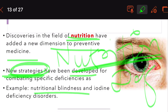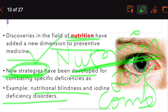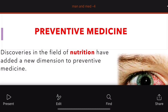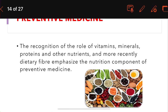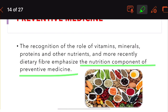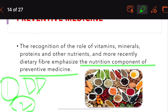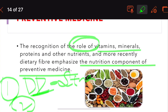Examples of deficiency disorders include nutritional blindness and iodine deficiency disorders, and strategies have been developed to combat these. The recognition of the role of vitamins, minerals, protein, nutrients, and dietary fiber is enhancing the nutrition component of preventive medicine. First, deficiency disorders were identified and strategies laid down; second, the role of various vitamins, minerals, proteins, and fiber added a nutrition component to preventive medicine.